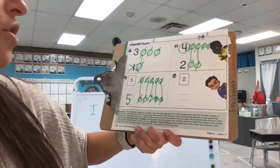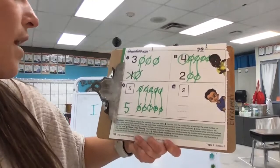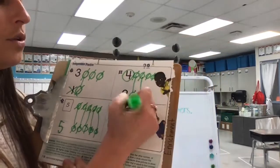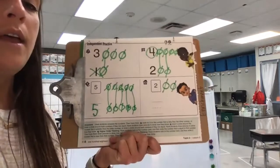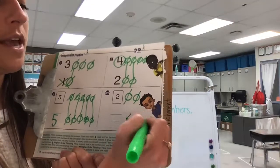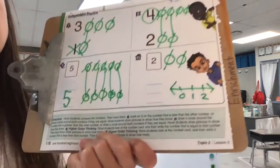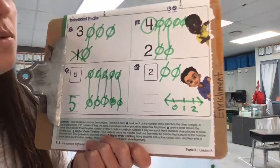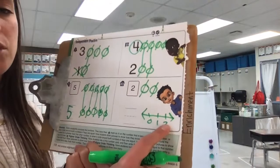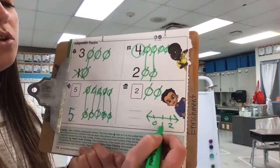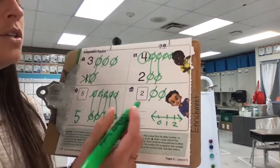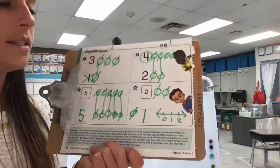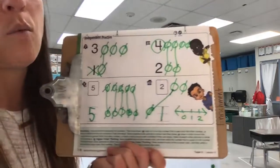Our next challenger says look at the number card, and then write a number that is less than the number you see, and draw a picture to match. So let's draw two circles — one, two — and mark them out: one, two. If we look at our number line, what are some numbers we could write that are less than two? We have zero or one. We can't do two because it's equal to two. Zero is less than two; one is less than two also. So let's write a one and draw a circle to show that one is less than two.